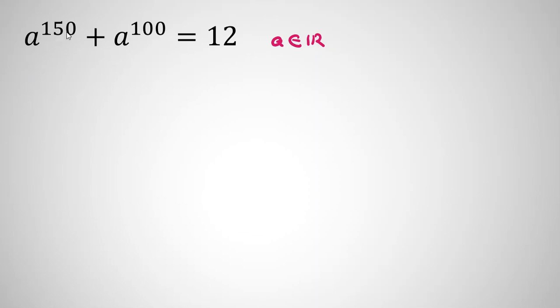If we pay attention to 150 and 100, both of them are multiples of 50. So we can say a to the power of 50 times 3 plus a to the power of 50 times 2, equals 12.